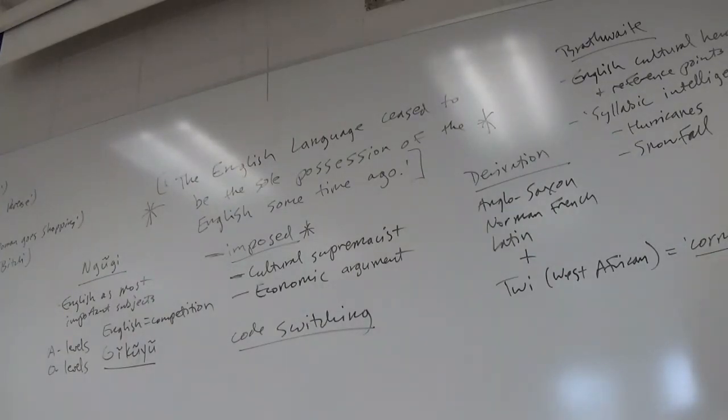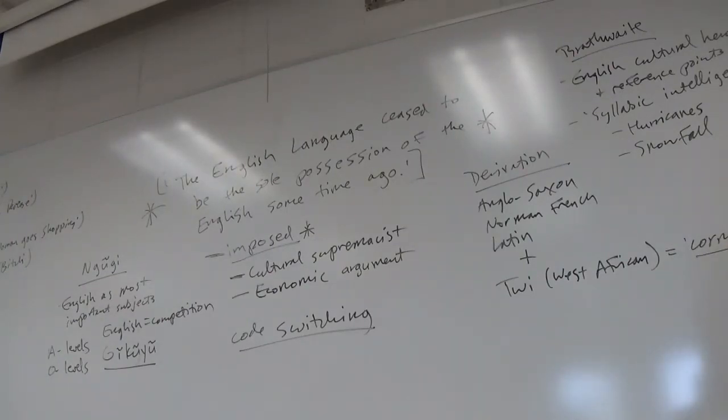We children could retell the stories the following day to other children who worked in the fields picking the pyrethrum flowers, tea leaves, or coffee beans from our European and African landlords. The stories with mostly animals as the main characters were all told in Gikuyu. Hare, being small, weak but full of innovative wit and cunning, was our hero. We identified with him as he struggled against the brutes of prey like lion, leopard, hyena. His victories were our victories and we learned that the apparently weak can outwit the strong. We followed the animals in their struggle against hostile nature—drought, rain, sun, and wind—a confrontation often forcing them to search for forms of cooperation.